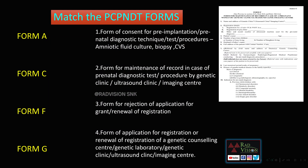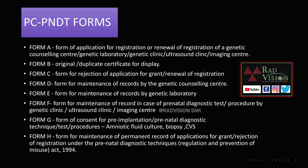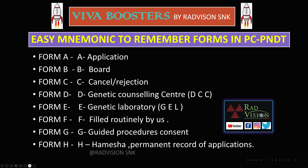Now we will see the PCPNDT forms and a matching question. The answer is A-4, C-3, F-2, G-1. The forms are: Form A - application for registration or renewal; Form B - original/duplicate certificate for display; Form C - rejection of application or grant or renewal; Form D - maintenance of records by genetic counseling center; Form E - maintenance of records by genetic laboratory; Form F - the form we fill before doing an ultrasound; Form G - consent for all interventional procedures including pre-implantation, amniotic fluid culture, biopsy, or chorionic villus sampling; Form H - maintenance of permanent record of applications.